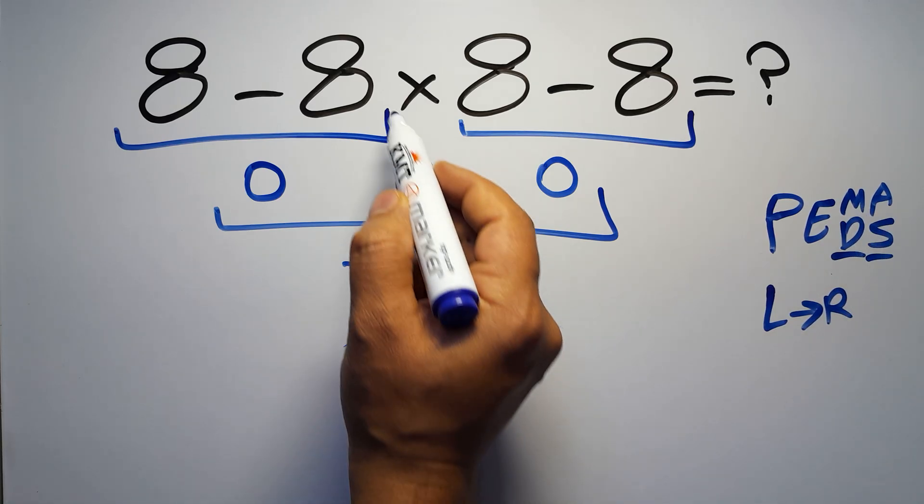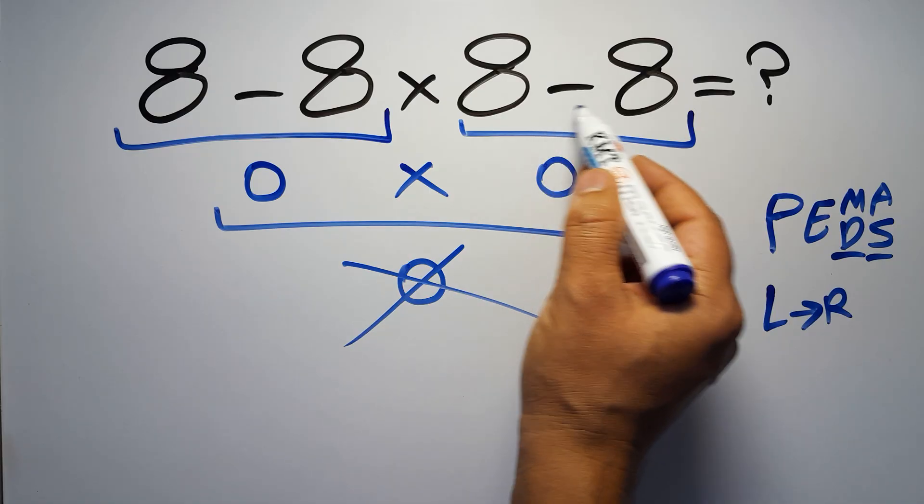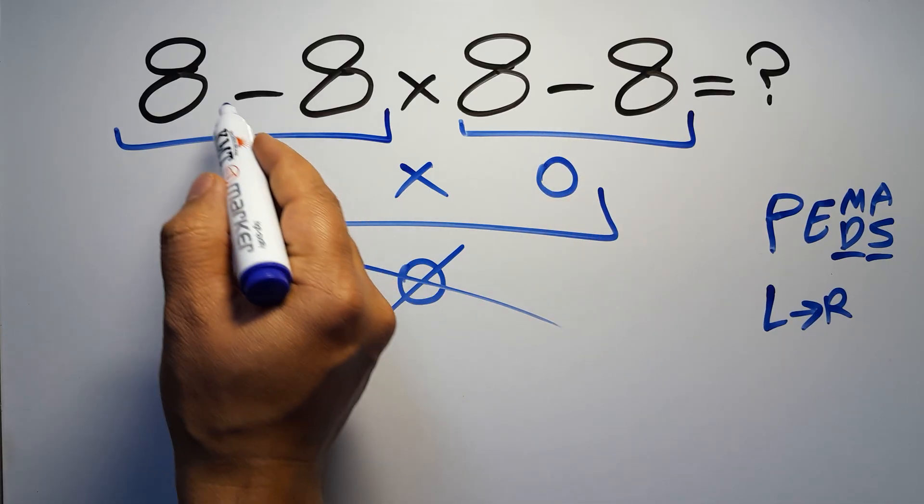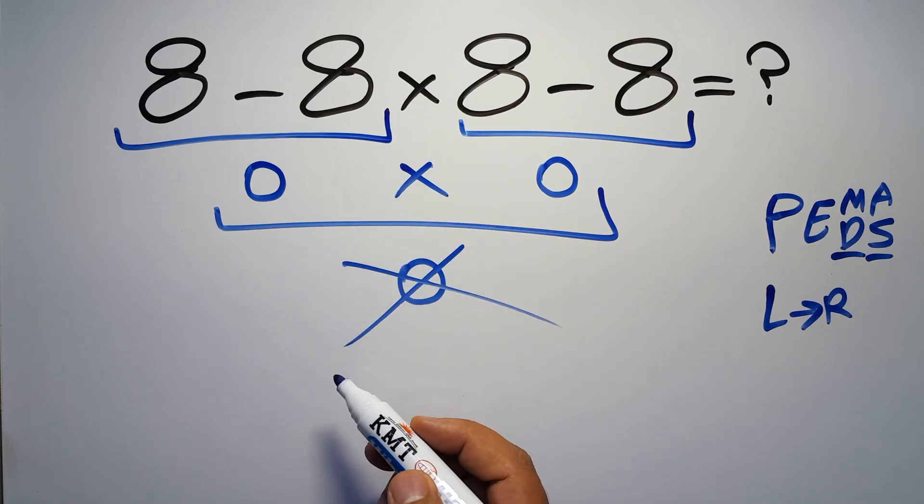According to PEMDAS, multiplication has higher priority than subtraction. So first we have to do the multiplication, then the subtractions. If we do any subtraction before the multiplication, it is wrong.